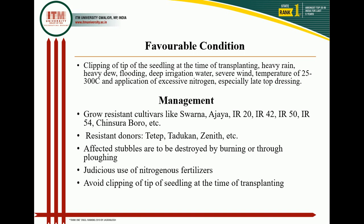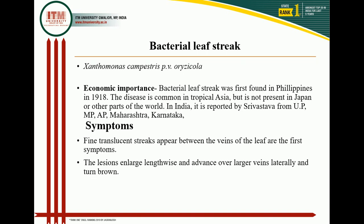The third disease is bacterial leaf streak, also caused by Xanthomonas oryzae pathovar oryzicola. Xanthomonas is also a gram-negative aerobic bacterium with monotrichous flagella. Bacterial leaf streak was first found in the Philippines in 1918. The disease is common in tropical Asia but is not present in Japan and other parts of the world. In India, it was reported by Srivastava from Uttar Pradesh, Maharashtra, Madhya Pradesh, Karnataka, Orissa, Haryana, and West Bengal.